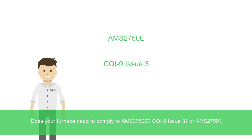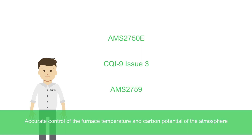Does your furnace need to comply to AMS 2750E, CQI 9 issue 3, or AMS 2759? Accurate control of the furnace temperature and carbon potential of the atmosphere make it easier to meet the requirements of industrial heat treatment standards.